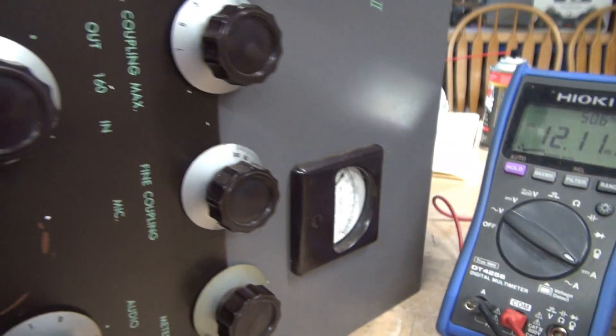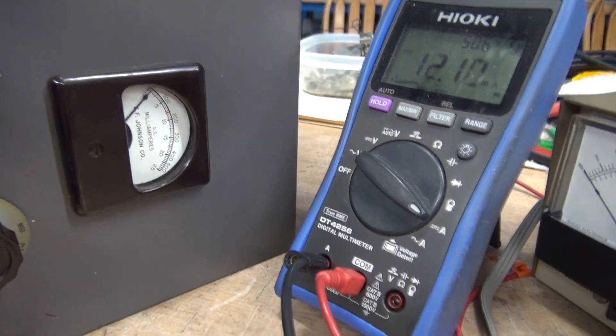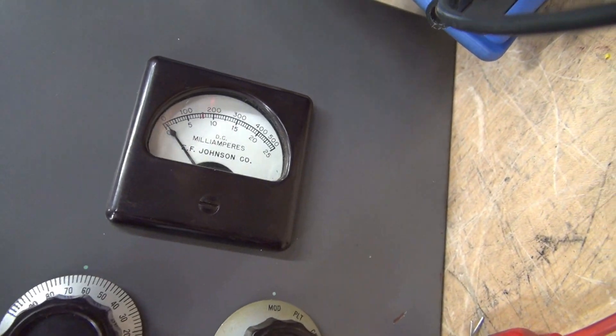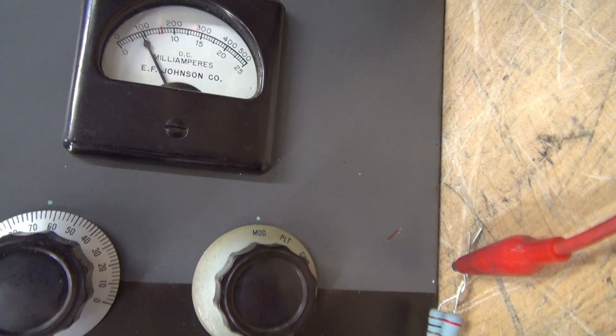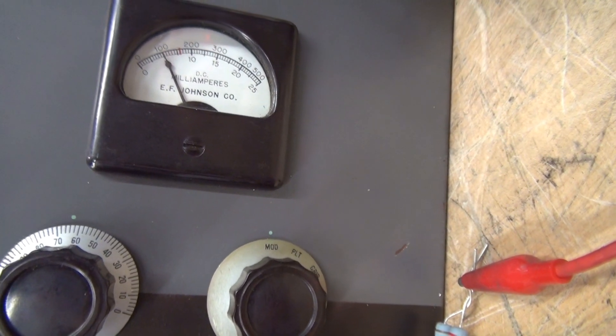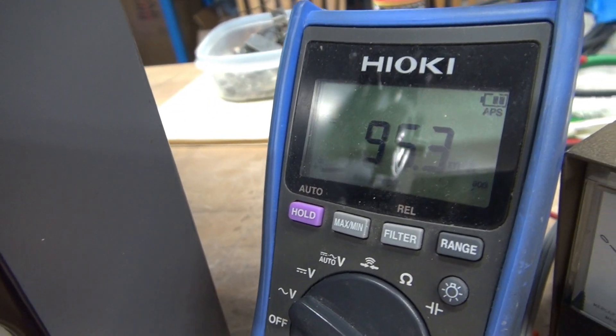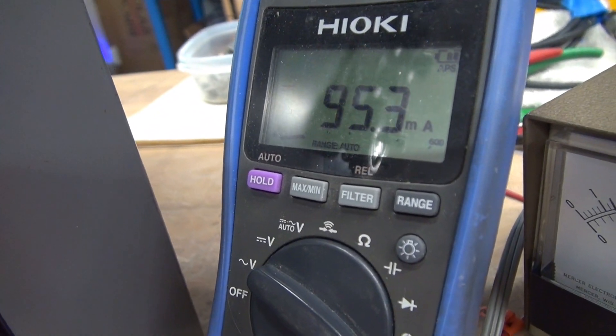So back over to my setup. I am now on the modulation setting. I'm going to bring up my voltage. There is 100 milliamps on modulation. What do we got? About 95.3.